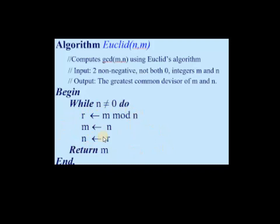How many times do you need to do this? Till the second number becomes zero. While N is not equal to zero, keep doing it. Whenever N becomes zero, stop. At that point, the first number M will be the GCD — return M.